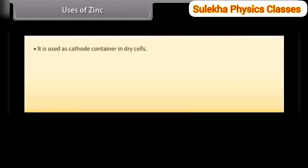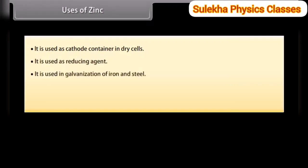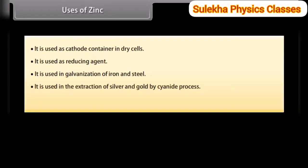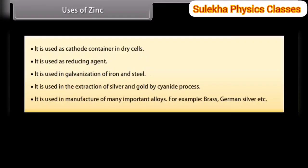Uses of zinc. It is used as the cathode container in dry cells and as a reducing agent. It is used in the galvanization of iron and steel, and in the extraction of silver and gold by the cyanide process. It is used in the manufacture of many important alloys, for example brass and German silver.